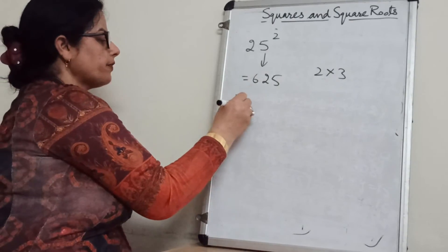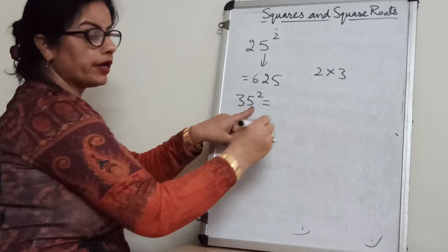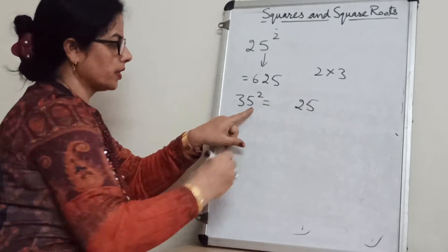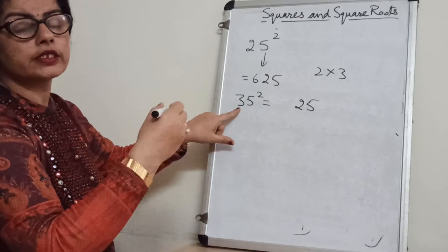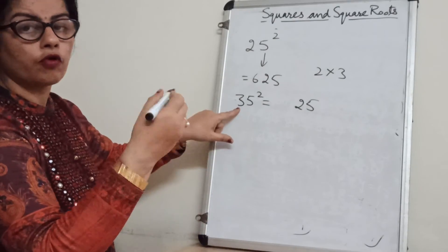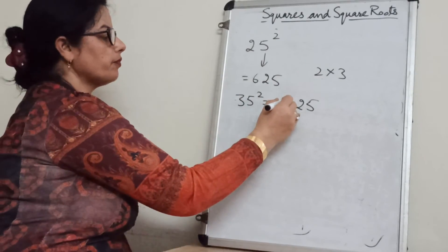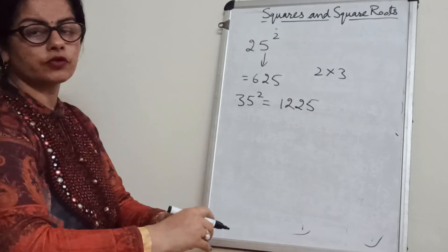If there is 35 square. Then 5 into 5 is 25. And here is 3. What is the next number of 3? 3 into 4 is 12. So 1,225 will come.